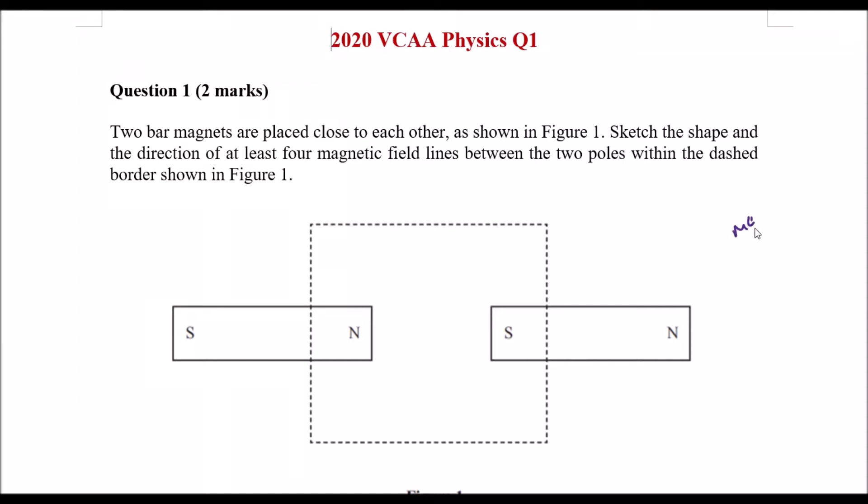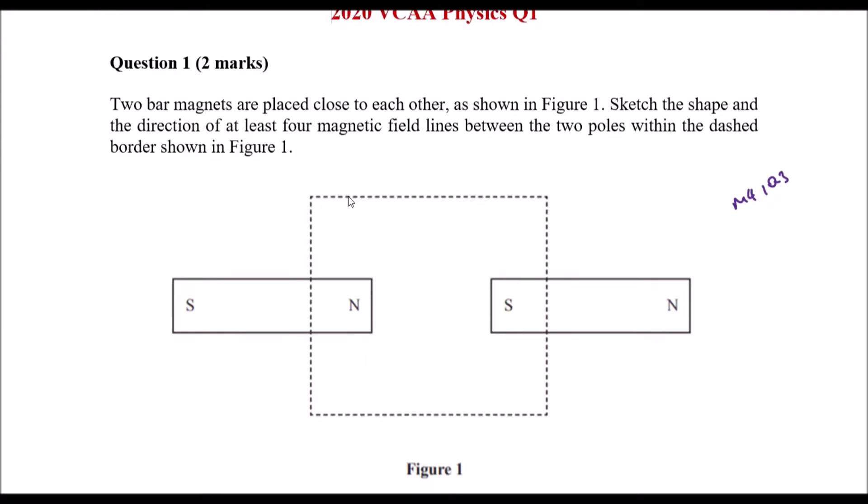Today we'll be covering the module for inquiry question number three, all about magnets. So in this question we have two bar magnets placed close to each other as shown in this video here. Sketch the shape and direction of at least four magnetic field lines between the two poles within the dashed border.